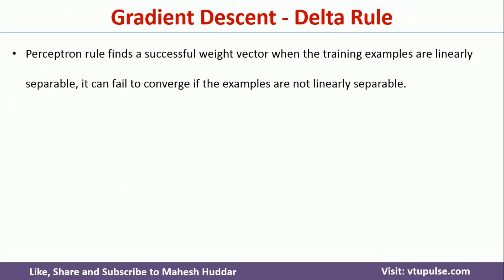In the previous videos, I discussed the perceptron rule. The perceptron rule is used to find the successful weight vector to classify linearly separable training examples. That is, we can use the perceptron rule only if the training examples are linearly separable. If they are not linearly separable, we cannot use the perceptron rule.